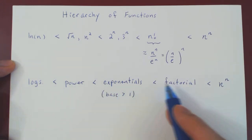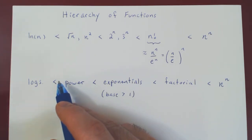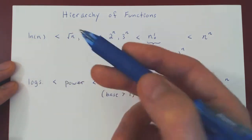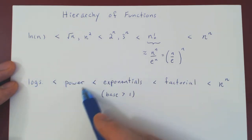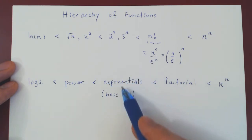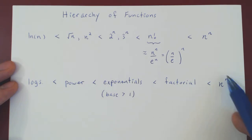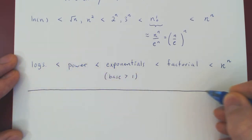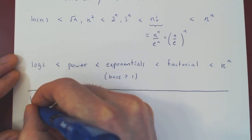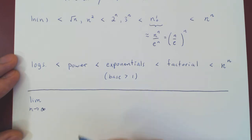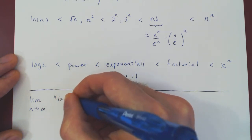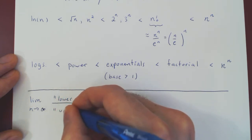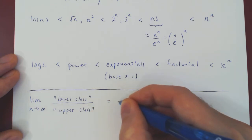What do I mean by much smaller? I don't just mean smaller in terms of a multiple. I mean that as n goes to infinity — this hierarchy is when n is very large — logarithmic functions are much smaller than power functions, which are much smaller than exponential functions, which are much smaller than the factorial, which in turn is much smaller than n to the n. Specifically, if you let n approach infinity and take the ratio of a lower class function over an upper class function, the ratio is always zero in the limit.